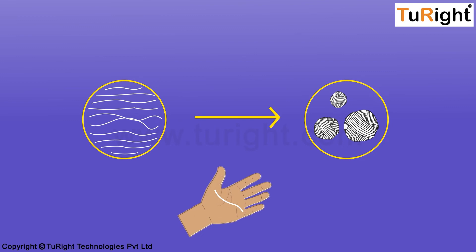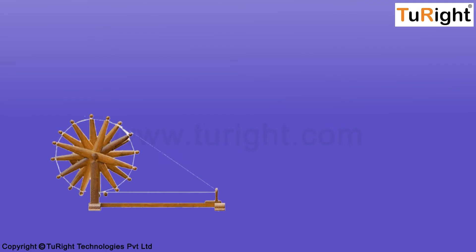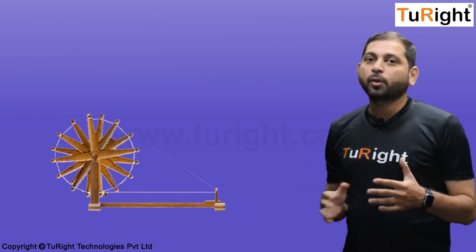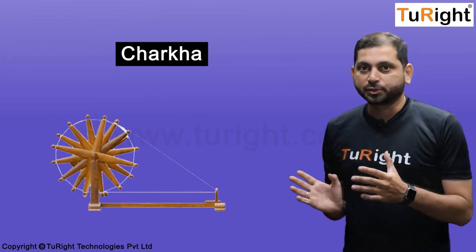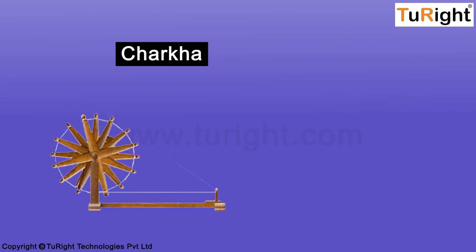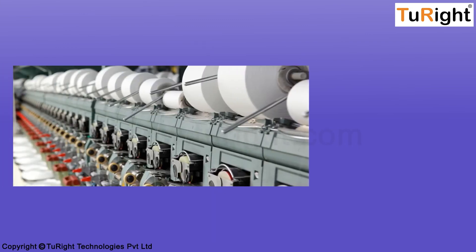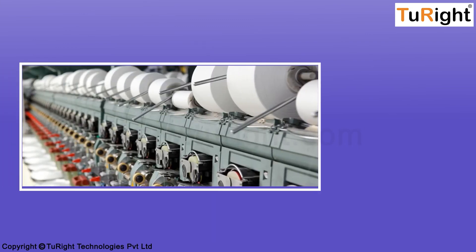If this is how spinning occurs, imagine the amount of effort needed to make yarn out of so much cotton. Of course, there are machines which help us do that. In countries like India, since many years the traditional equipment like the charkha was used. However, with advancement in the field of technology, newer machines to spin the threads into yarn are now available.